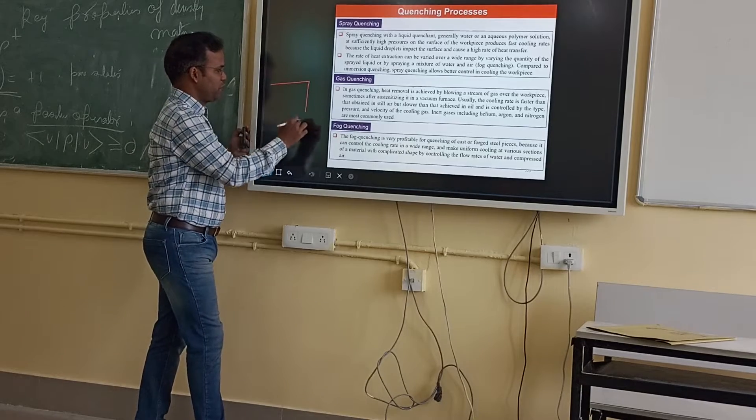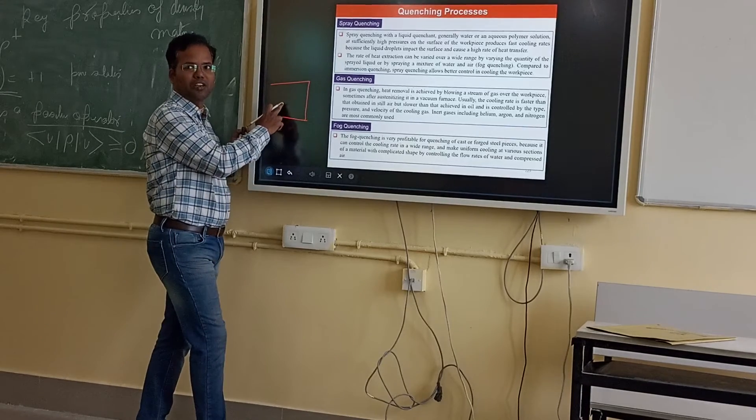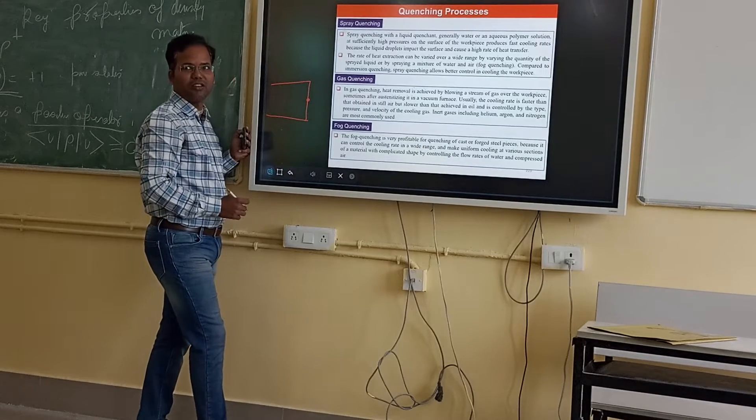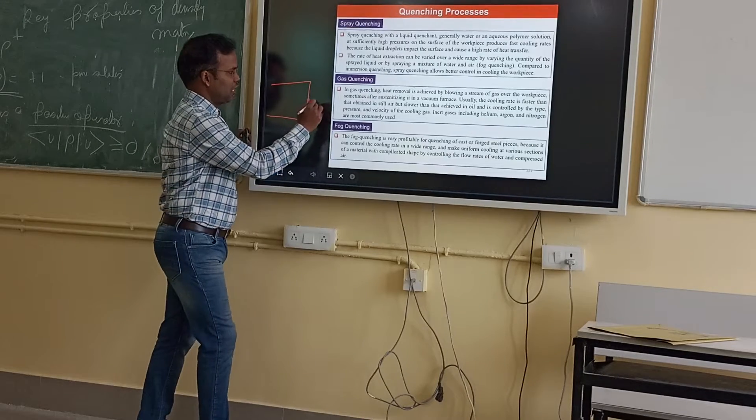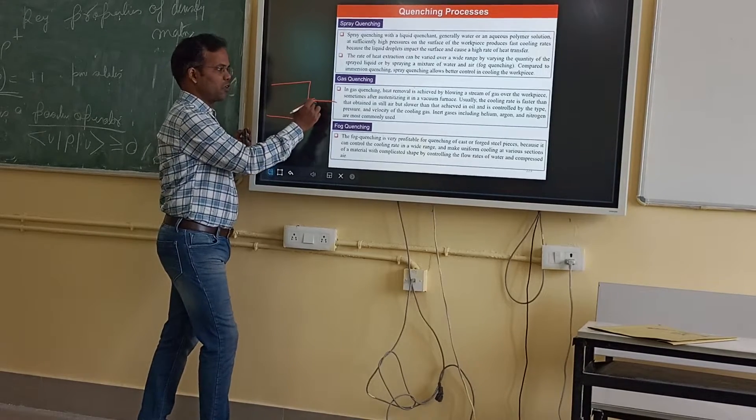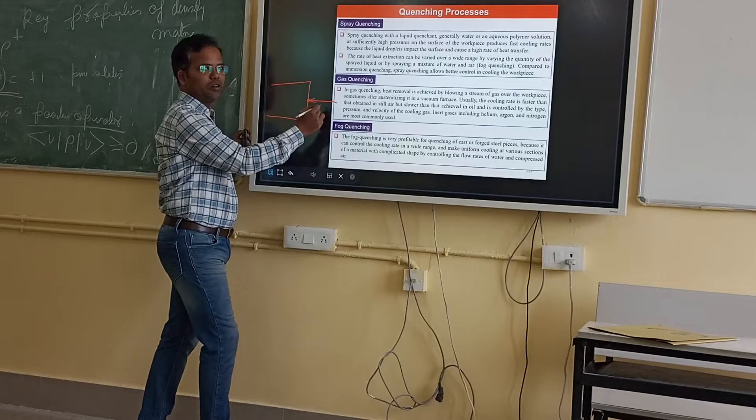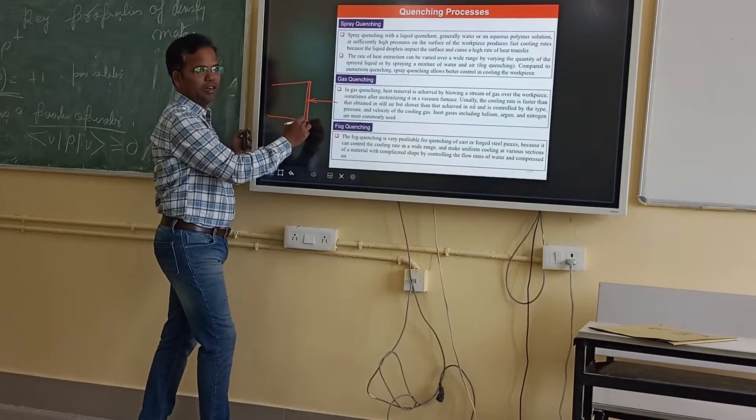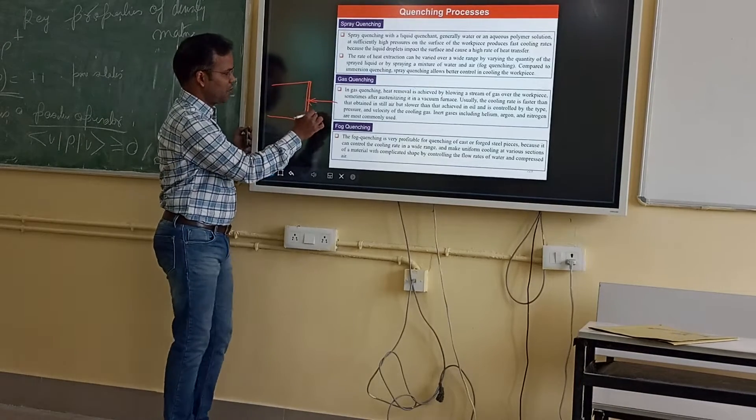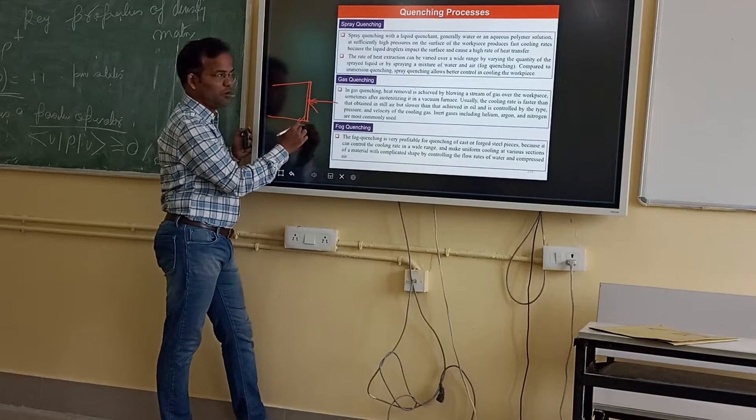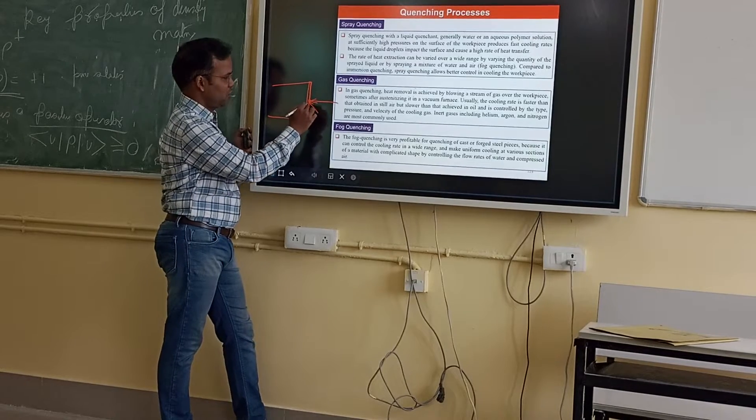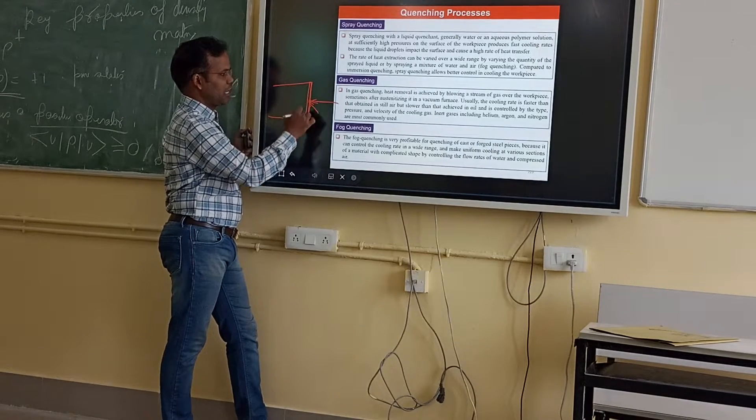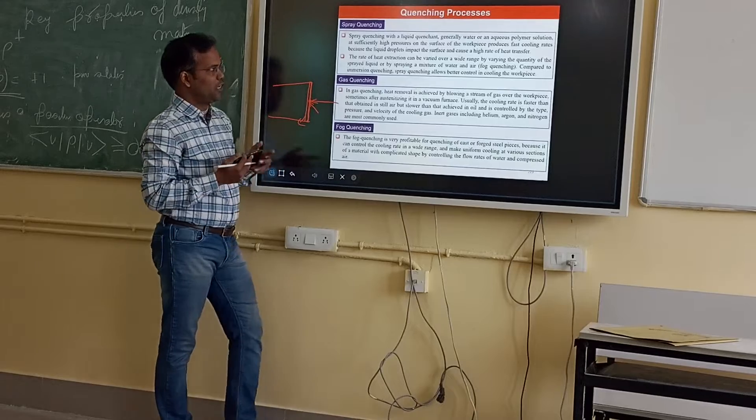For example, if this is the workpiece and you are spray quenching one section, we are only focusing on this part. A very small amount of liquid is required, you can spray here. But if you want to completely spray this part, heat extraction in this case will be less, in this case it will be more, because more liquid is actually in contact with the workpiece.